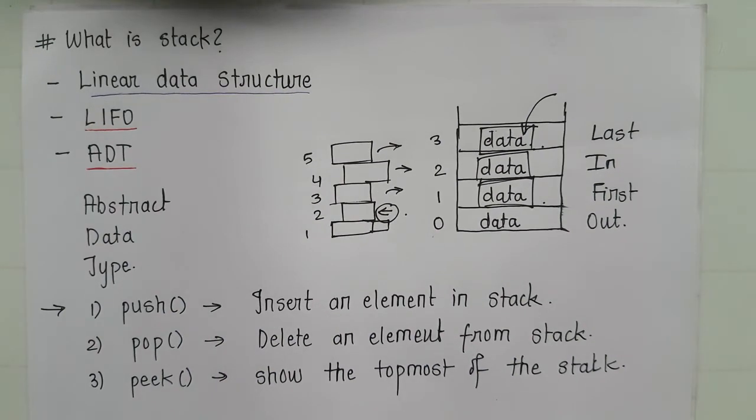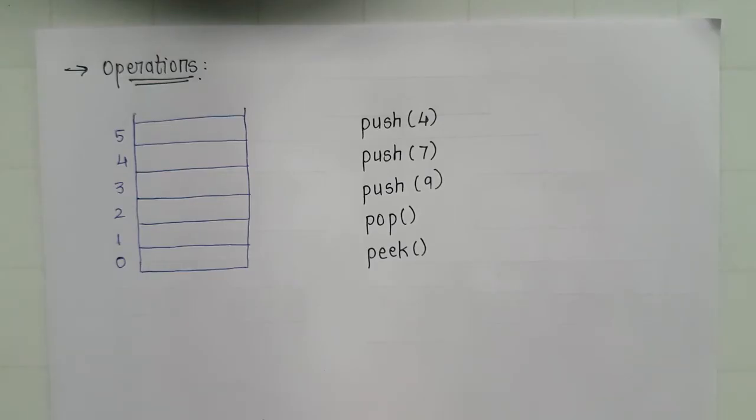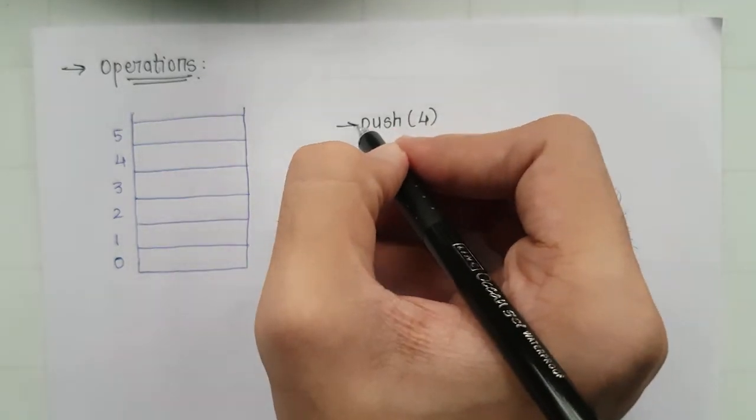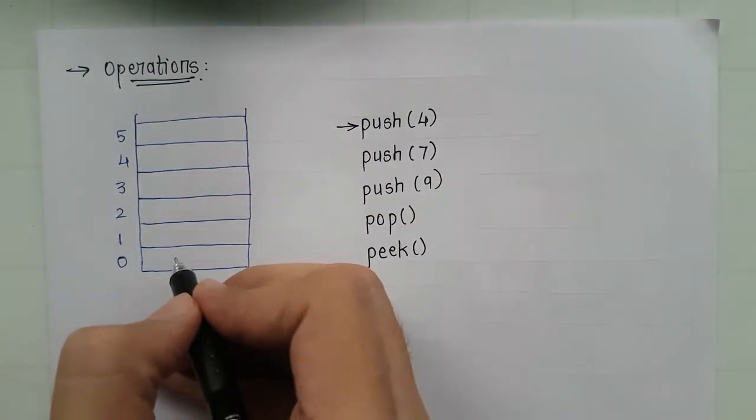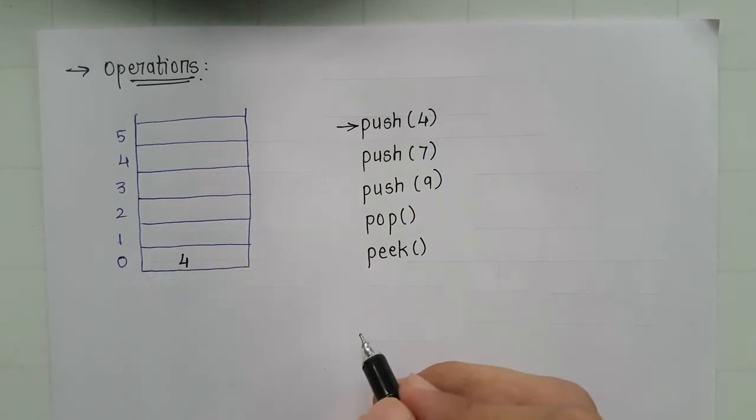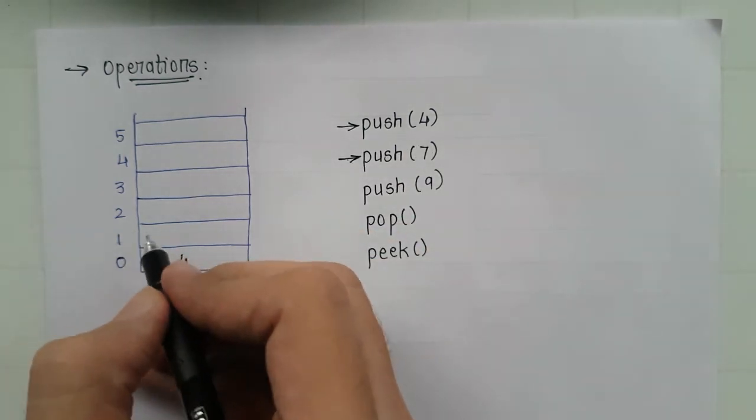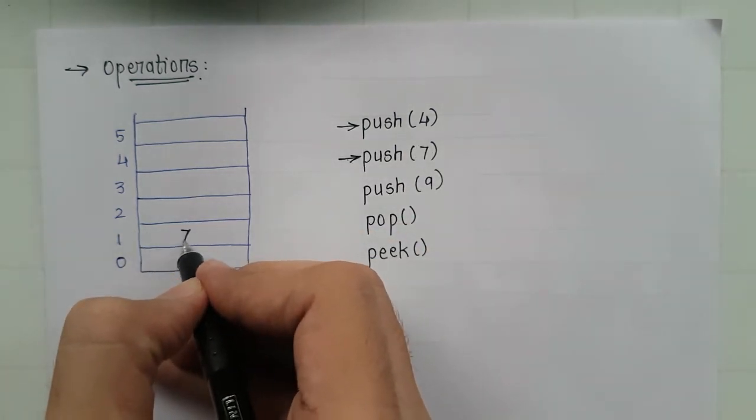Now we will see how the stack is operated. So now we will see the operations. So our first operation is push 4. So this operation would insert the 4, that is our data, on the zeroth index. Next is push 7. So now it would insert the 7 into our first index. Next is push 9.